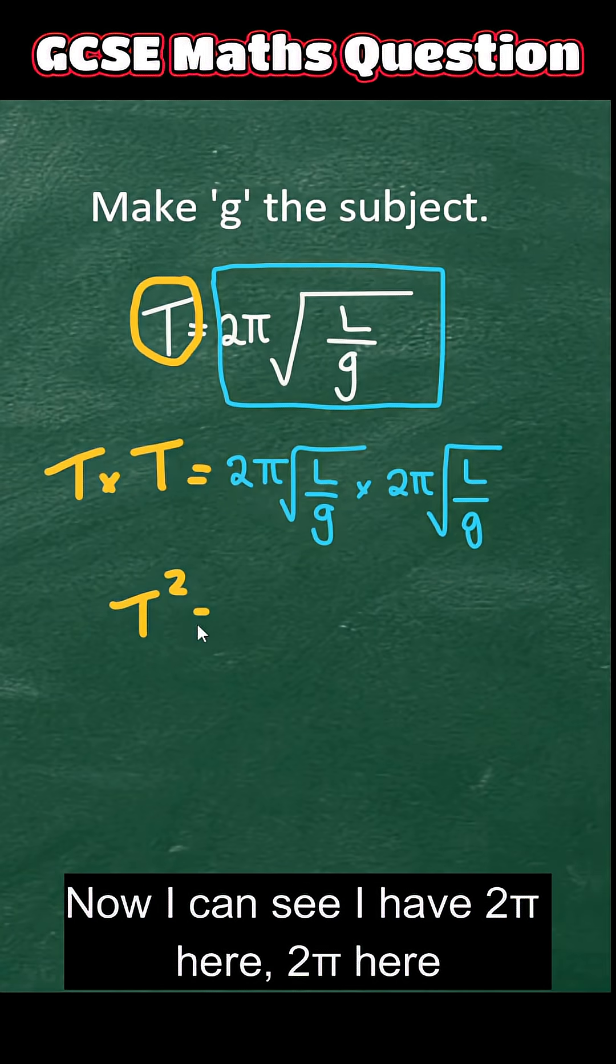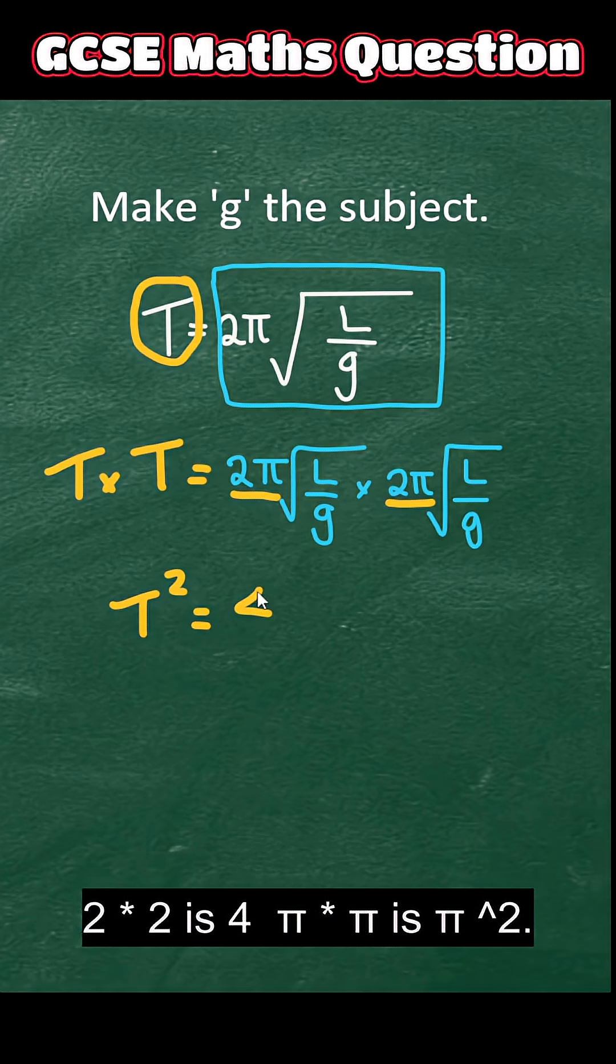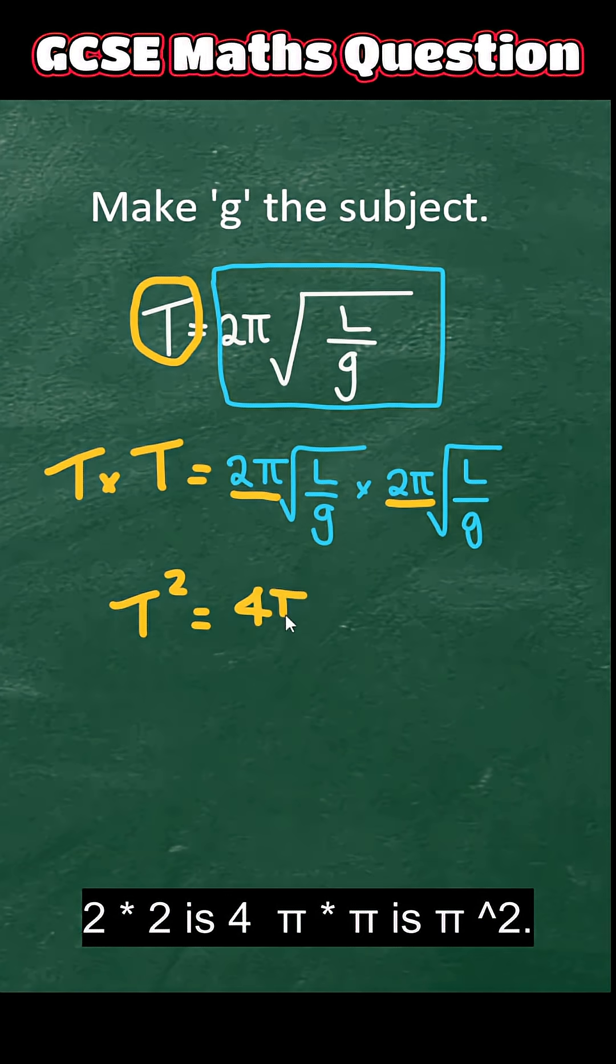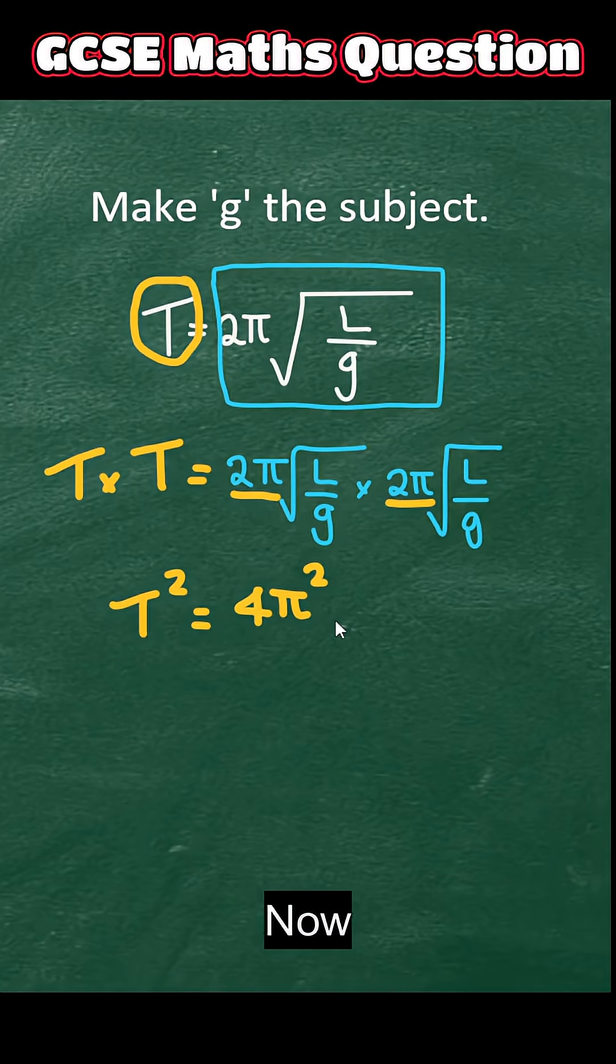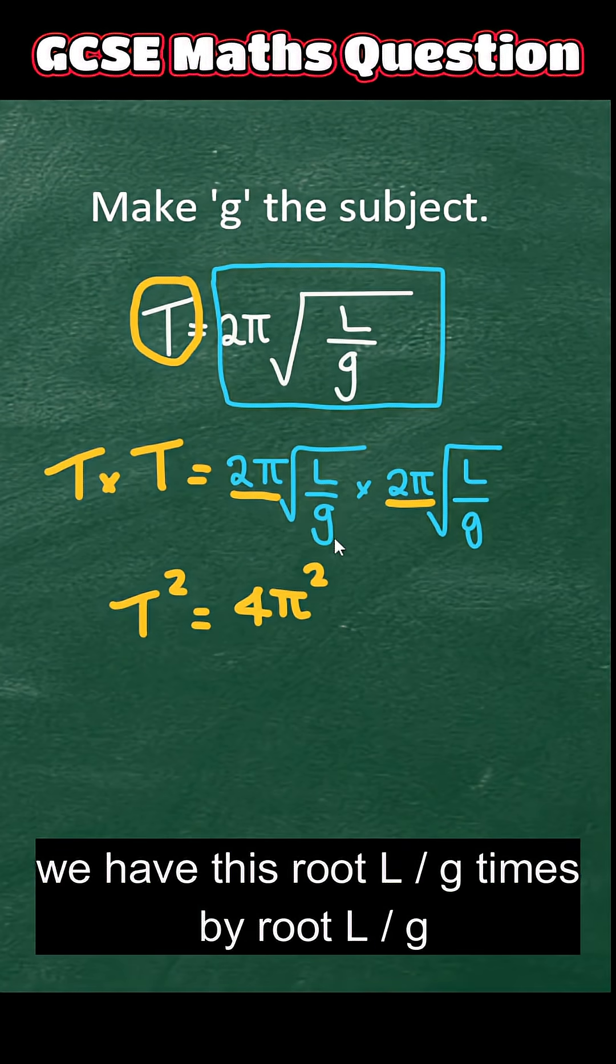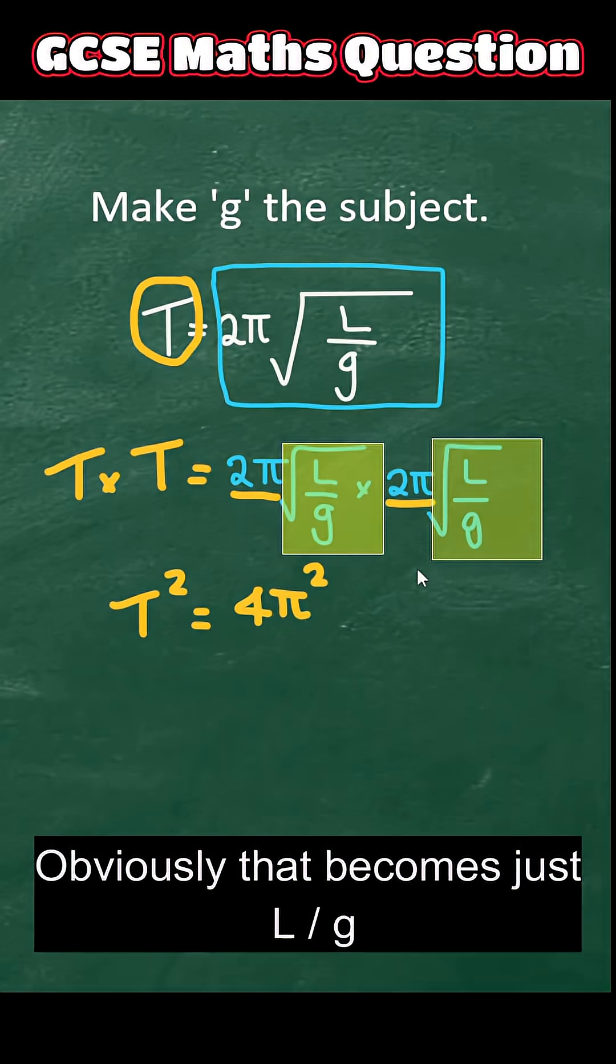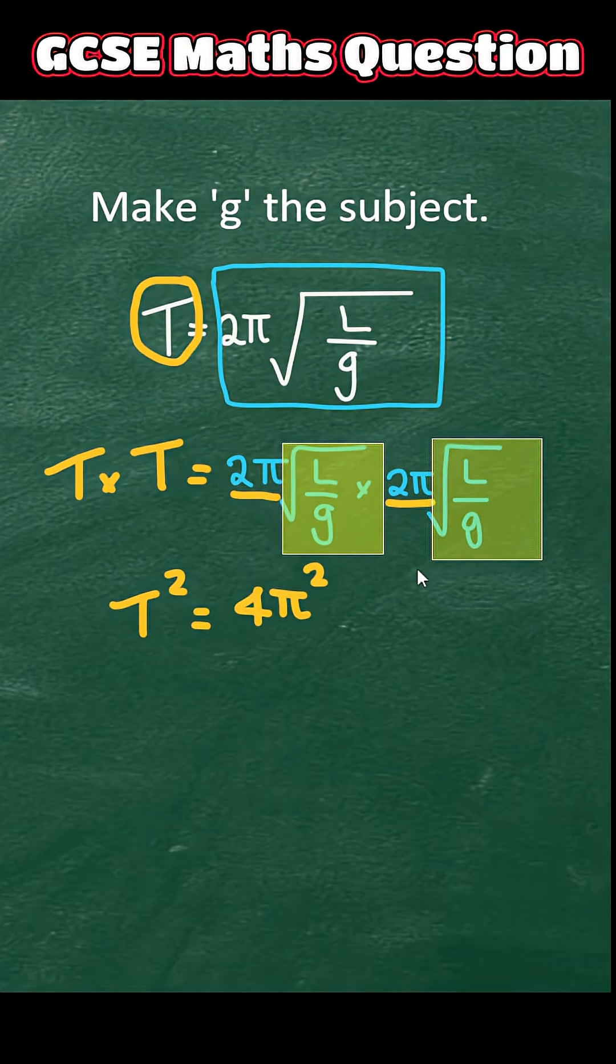Now I can see I have 2π here, 2π here. 2 times 2 is 4. Pi times pi is π squared. Now we have this root L over g times by root L over g. Obviously, that becomes just L over g.